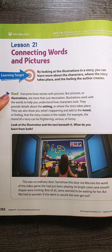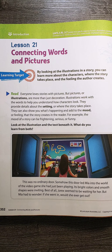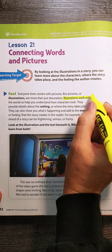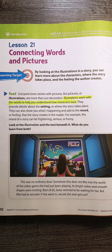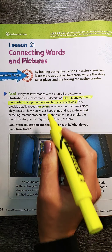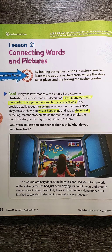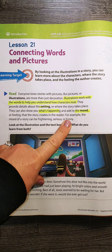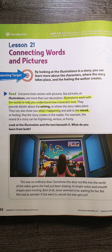Everyone loves stories with pictures, but pictures or illustrations are more than just decoration. They're not just there for prettiness. Illustrations work with the words to help you understand how characters look. Together they work. They provide details about the setting — so they tell me where it takes place. They can also show you what's happening and add to the mood, which is a feeling that the story creates. Is it making a story feel frightening or serious, or is it funny? What kind of mood is the story setting?